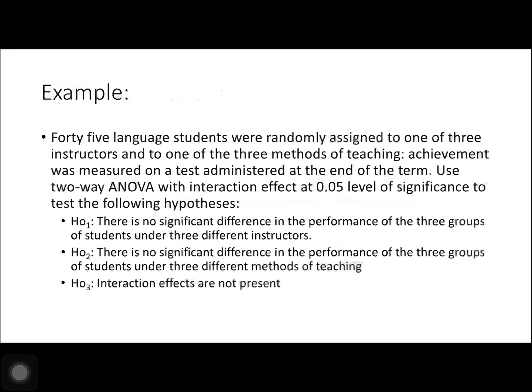For our example problem, 45 language students were randomly assigned to one of three instructors and to one of three methods of teaching. Achievement was measured on a test administered at the end of the term. We will use two-way ANOVA with interaction effect at a 0.05 level of significance to test the following hypotheses.